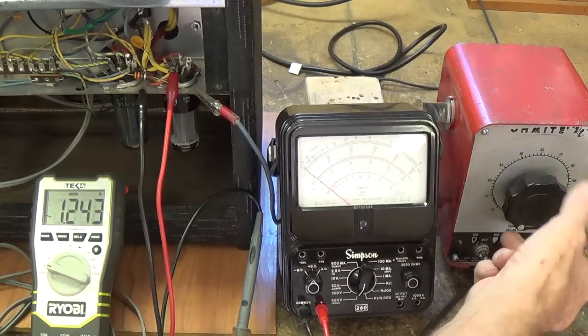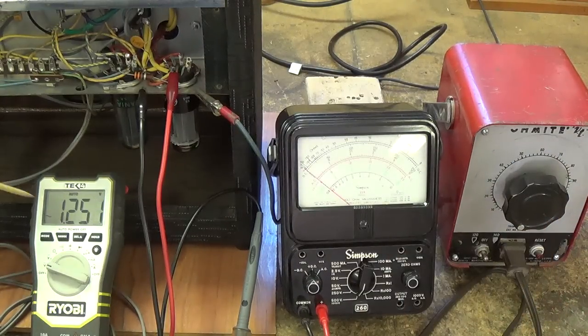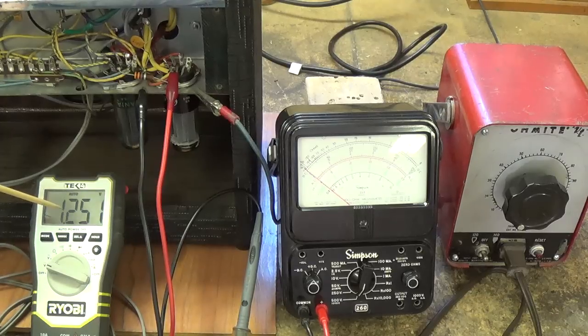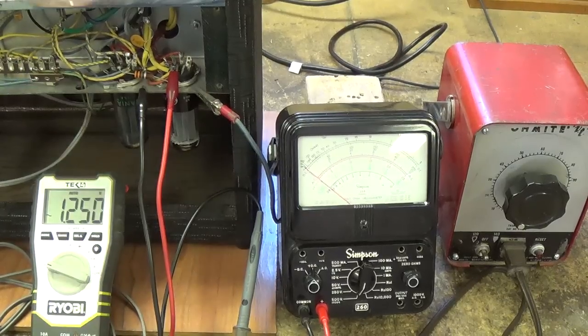Okay let's switch on the variac. The knob is set at zero output volts. Notice over here it is registering 1.25 volts of AC being applied to the power transformer and to the rectifier tube.